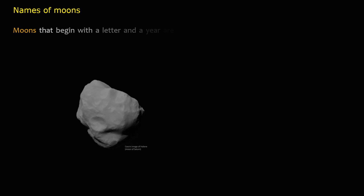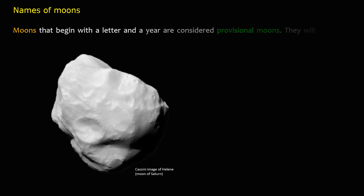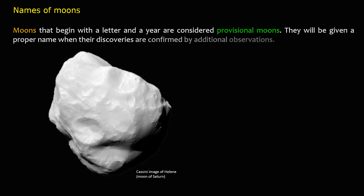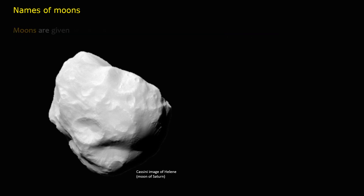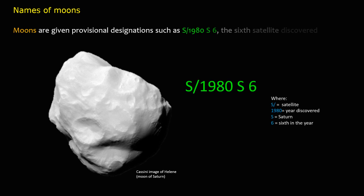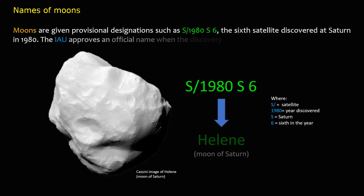Moons that begin with a letter and a year are considered provisional moons; they will be given a proper name when their discoveries are confirmed by additional observations. Moons are given provisional designations such as S/1980 S 6 — the sixth satellite discovered at Saturn in 1980. The IAU approves an official name when the discovery is confirmed.